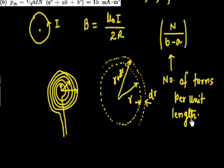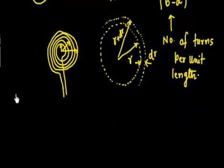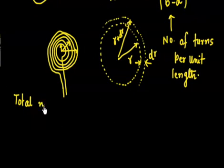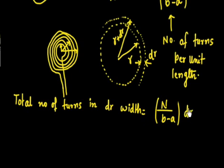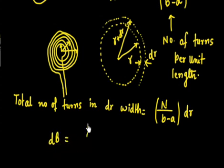Now, how do we find the total number of turns in a strip of width dR? Since we know turns per unit length, the total number of turns in dR width is N/(B − A) × dR. We can assume all these turns are at radius R, since dR is very small. The magnetic field contribution at the center from all these turns is dB = μ₀I / 2R.